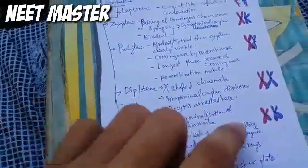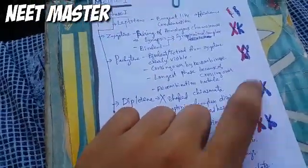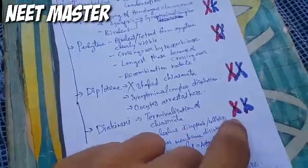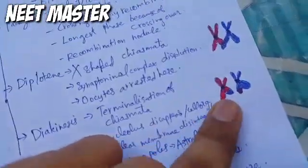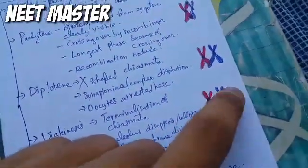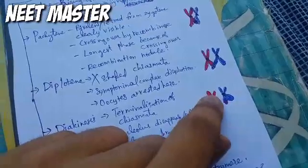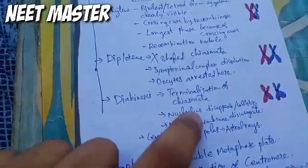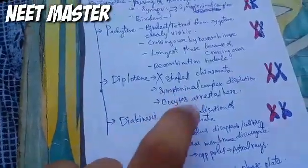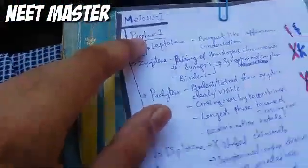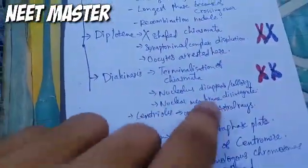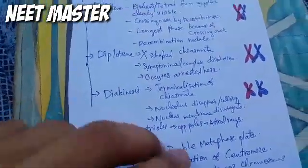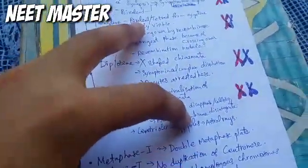In Diakinesis, the chiasmata terminalize. Crossing over occurs at chromosome 3 and the chiasmata, and then the nucleolus disappears as well — the nuclear membrane disintegrates. The centriole moves to the opposite pole and the astral rays project.